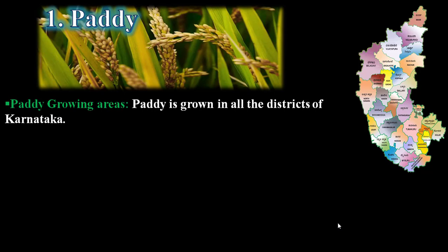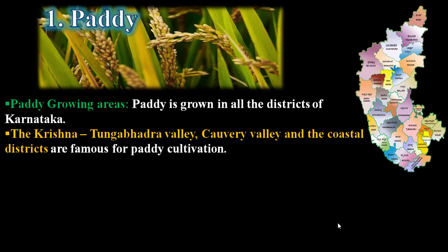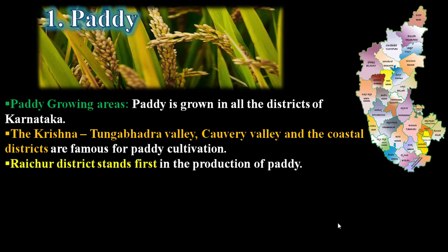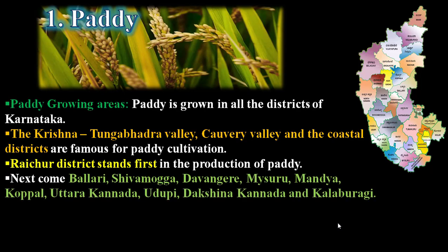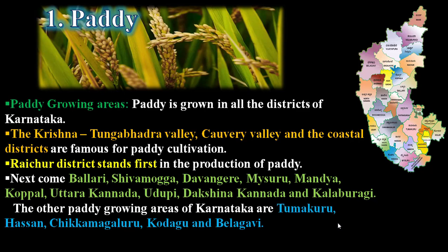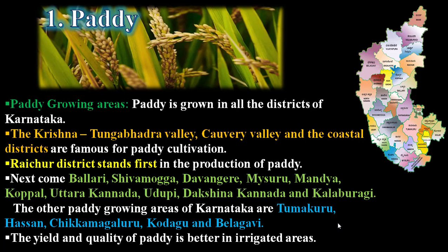Paddy is grown in all the districts of Karnataka. The Krishna-Tungabhadra valley, Kaveri valley, and the coastal districts are famous for paddy cultivation. Raichur district stands first in production, followed by Ballari, Shivamogga, Davanagere, Mysuru, Mandya, Koppal, Uttara Kannada, Udupi, Dakshina Kannada, and Kalaburagi. Tumakuru, Hassan, Chikkamagaluru, Kodagu, and Belagavi also grow paddy. Yield and quality are better in irrigated areas.